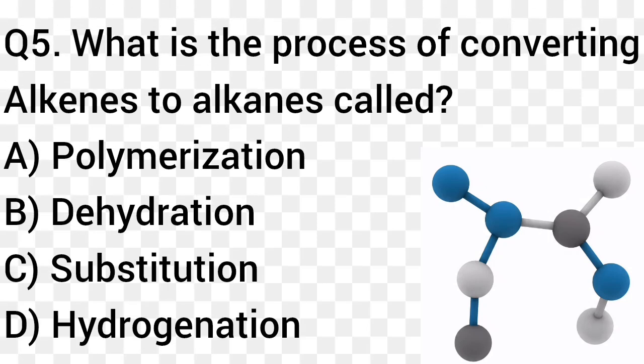Question number 5. What is the process of converting alkanes to alkenes? Option A: Polymerization. Option B: Dehydration. Option C: Substitution. Option D: Hydrogenation. The right answer is option D, Hydrogenation.